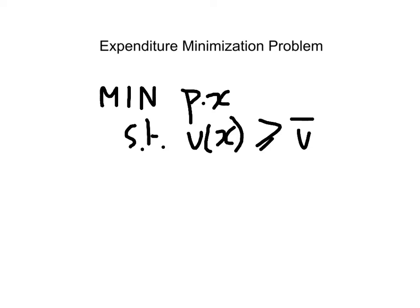The solution to this problem, x-star, we are going to call the Hicksian demand. Hicksian demand function, it's going to be a function of prices and the utility level being attained, U-bar. So that's the cost-minimizing bundle to reach U-bar.